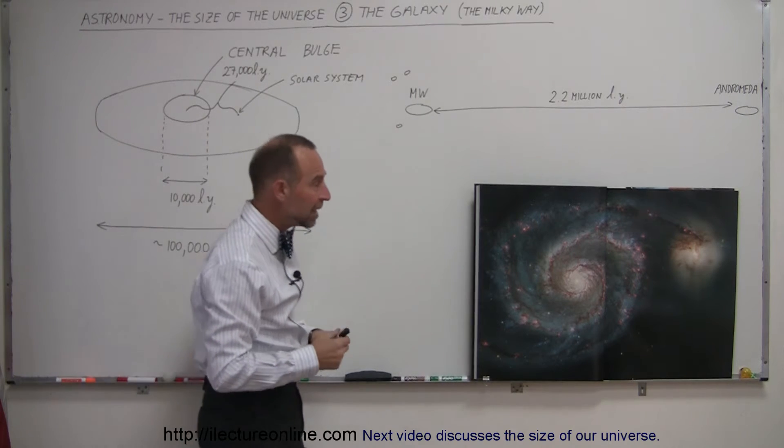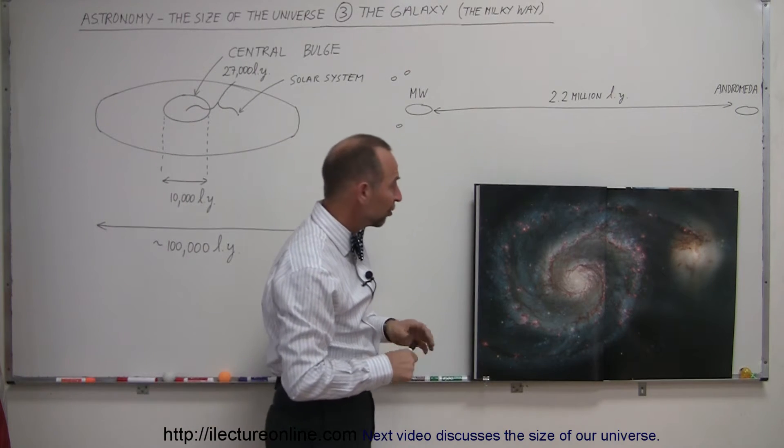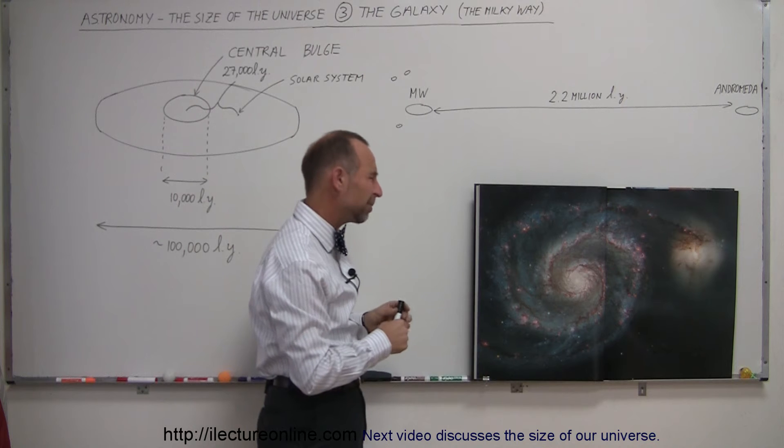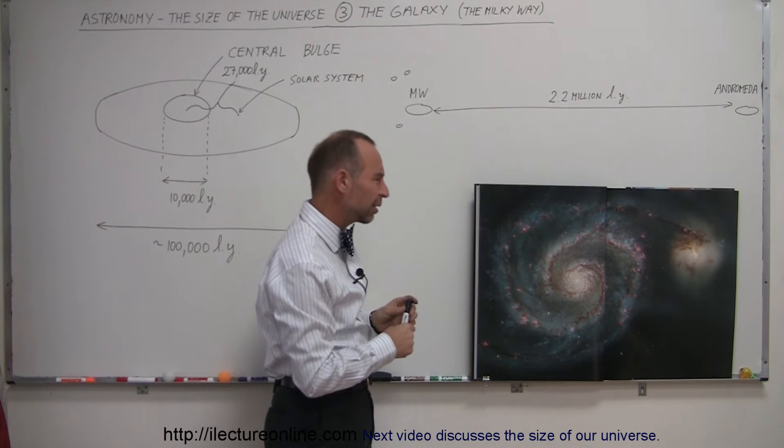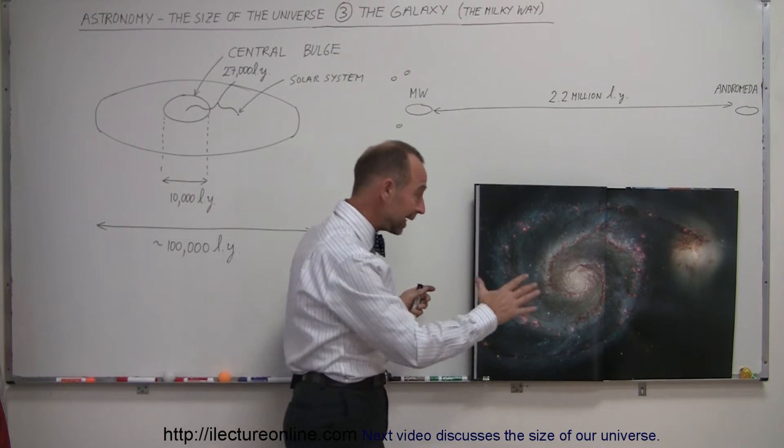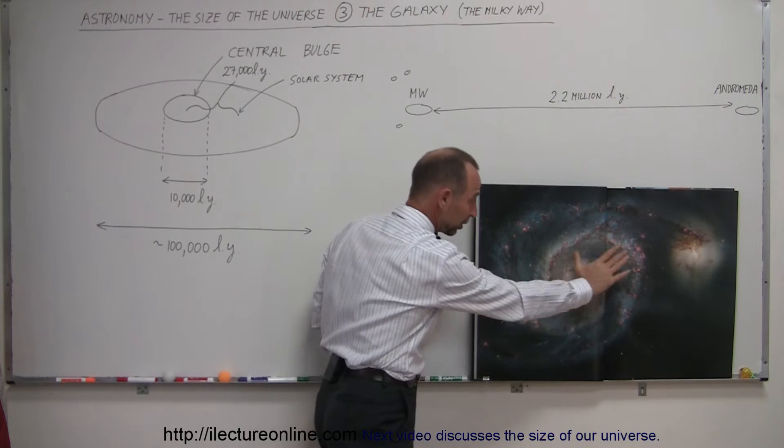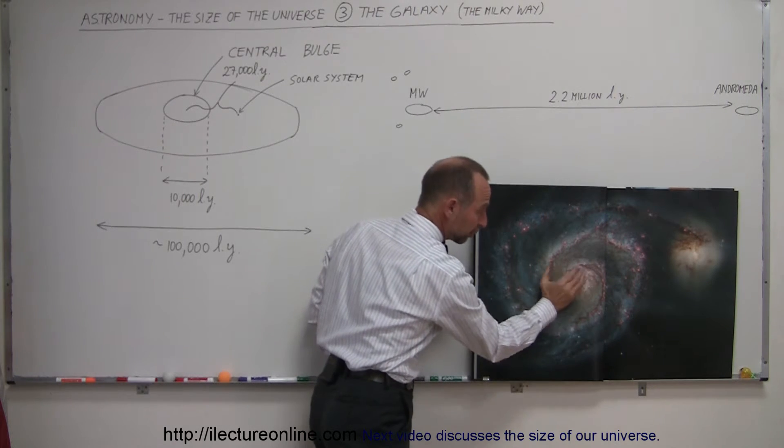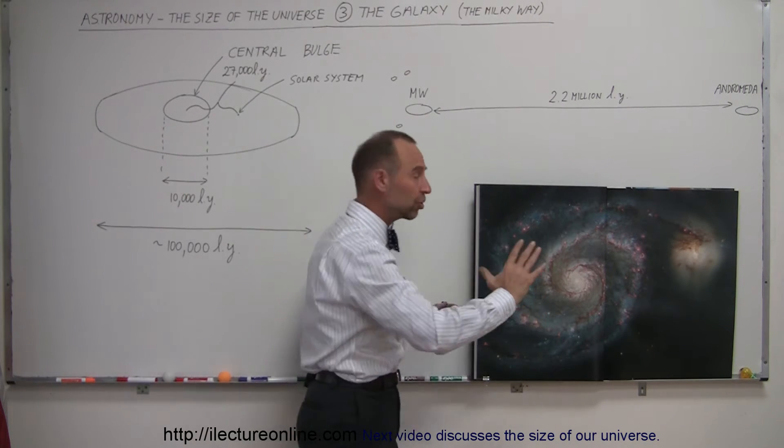Here's a beautiful picture of the M51, which is what we call the Whirlpool galaxy. It's about 30, 40 million light years away from here. Again, beautiful picture. And really what you're looking at is the central bulge of the galaxy here. It's kind of a head-on shot.